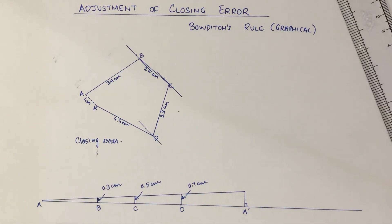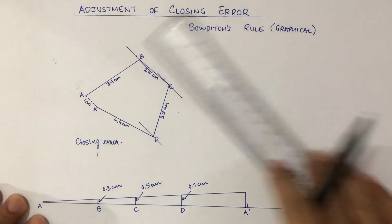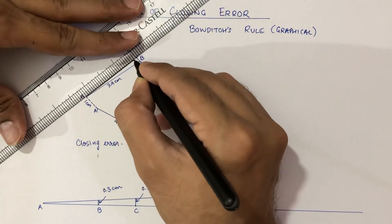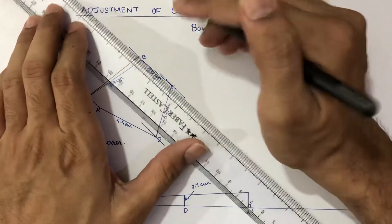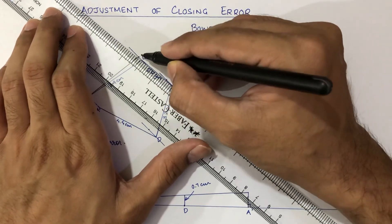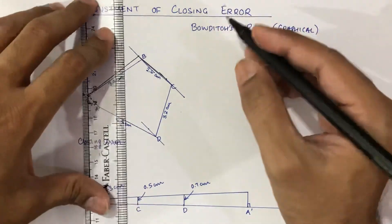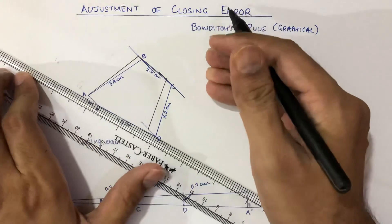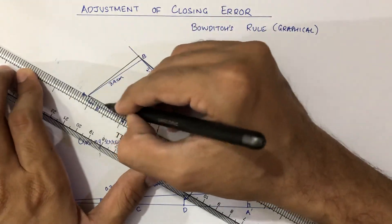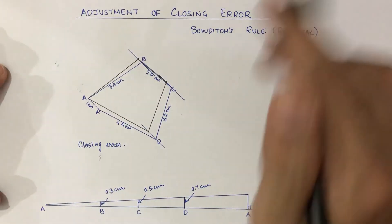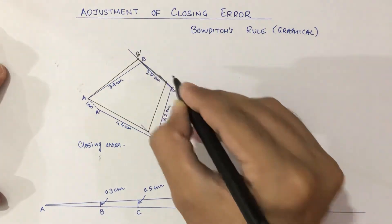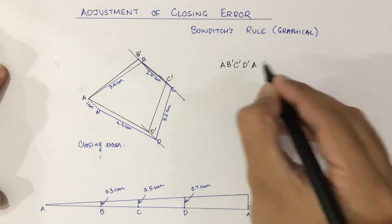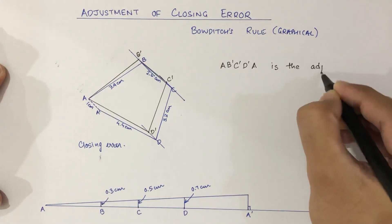Now we just have to plot these points. We join A to the error point at B, then B to the error point at C, then C to the error point at D, and finally close this traverse back at the starting point A. We call these adjusted points B', C', and D'. So A, B', C', D', A is the adjusted traverse.